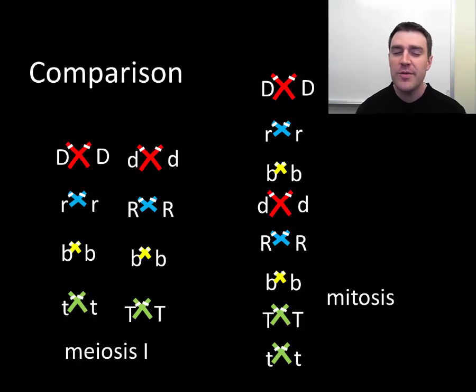I just want to finish the video by emphasizing why none of this ever happens in mitosis. Remember that in mitosis, we just create a lineup where the homologous pairs are never brought side by side.